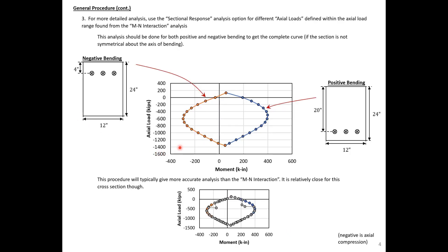We can get the plot by changing the applied axial load and running the sectional response for each applied axial load. The blue points and line are for our positive bending case, and the orange points are for our negative bending case. Note that negative is axial compression here. Comparing this to the automatically generated moment-axial interaction diagram, it does a pretty good job for this cross section, but for more complex sections the difference can increase. So it's better to always do the iterative process using the sectional response with different applied axial loads.